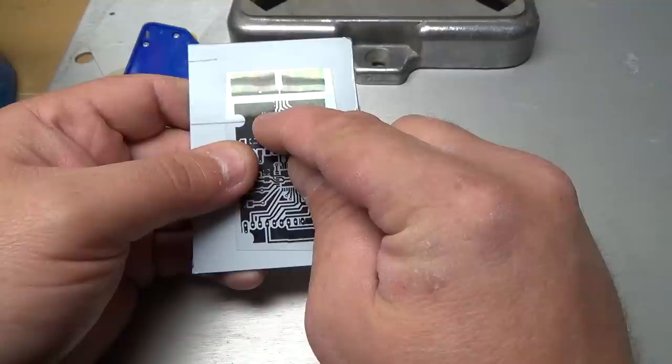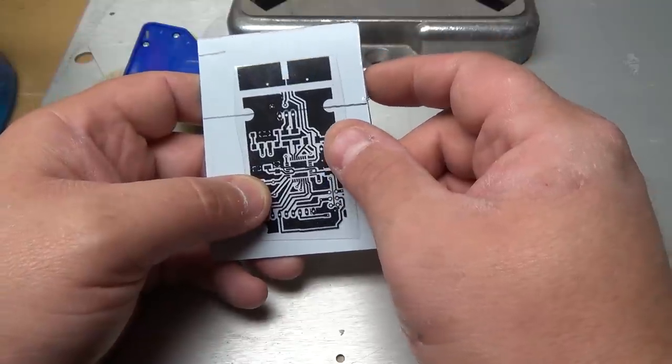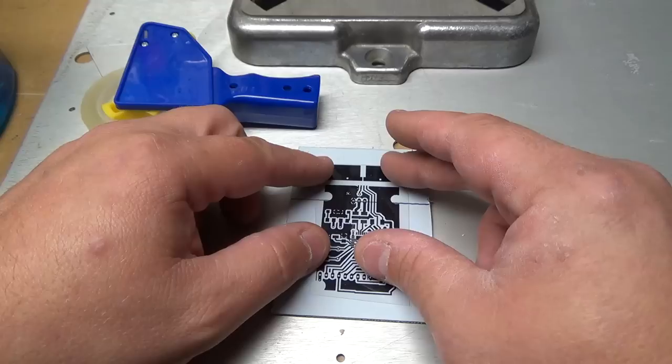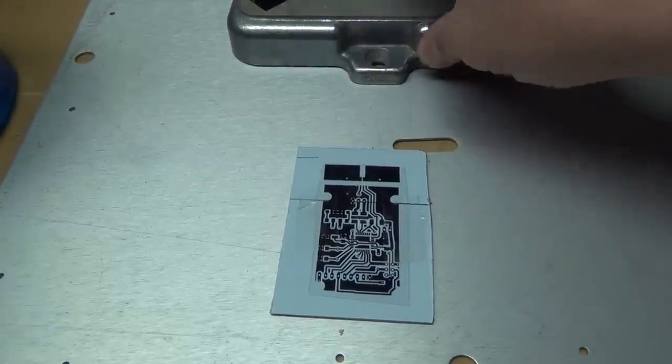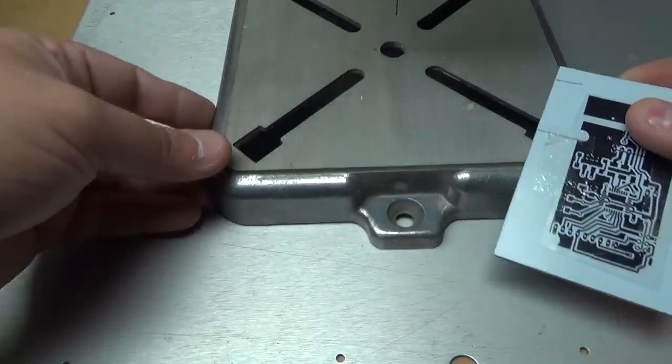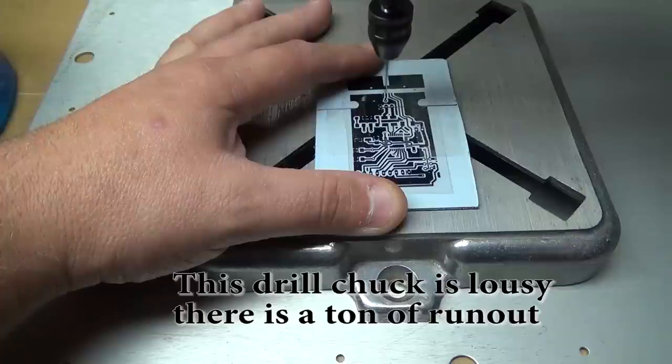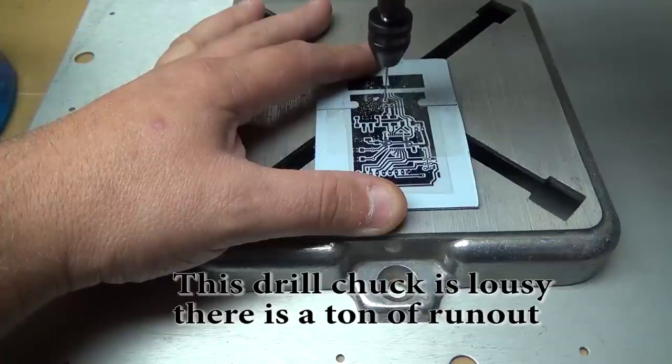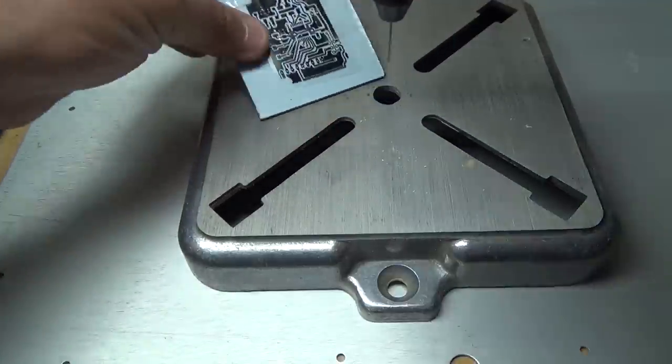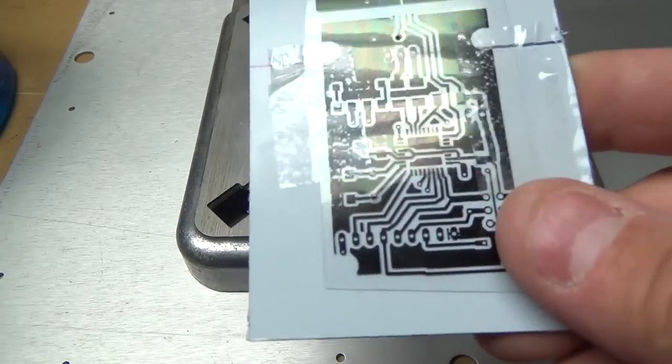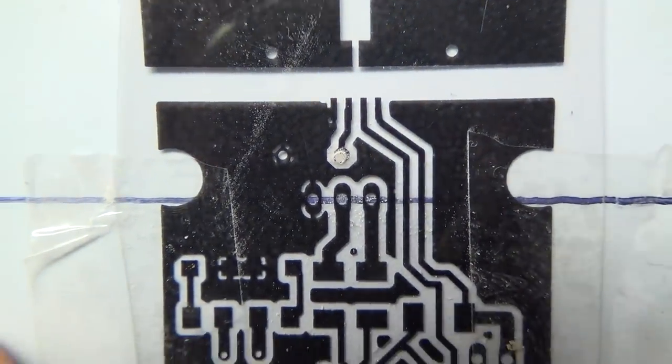I'm going to drill that component hole right there and one of the crystal holes to use as my alignment. First I'm going to tape this down so it doesn't move, then put it up on the drill. That should be close enough for the alignment.